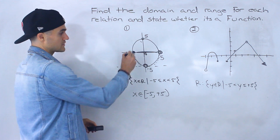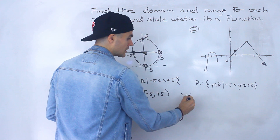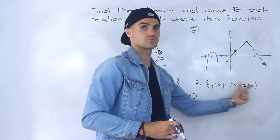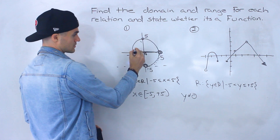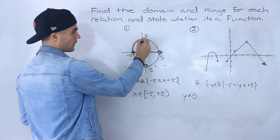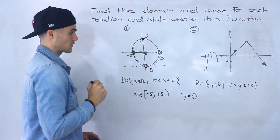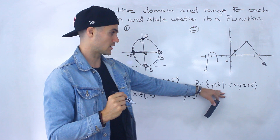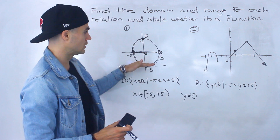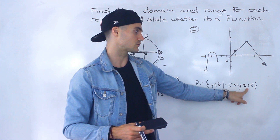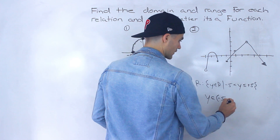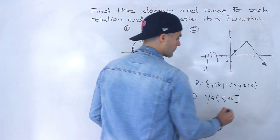Continuing upward, y = 0 is defined and all y values up to positive 5 are defined — and positive 5 is defined as well. So the range is y > −5 and y ≤ 5. In interval notation, y is an element from negative 5 (circle bracket, not inclusive) to positive 5 (square bracket, inclusive).